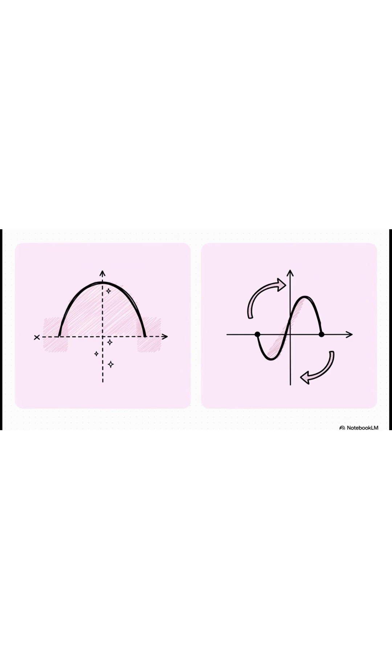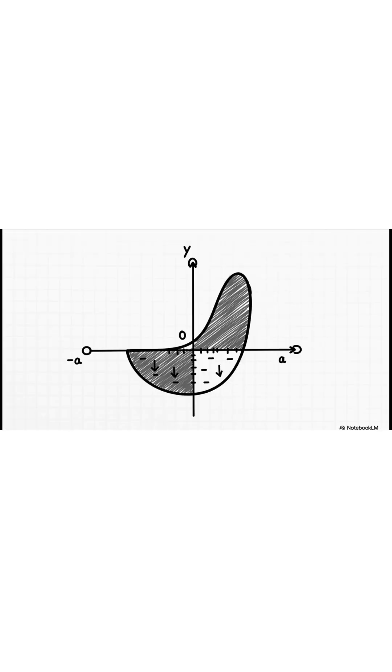But an odd function, like x cubed, has this cool rotational symmetry around the origin. You plug in a negative x, and you get the negative of the original function. That simple little test is everything. So let's actually visualize